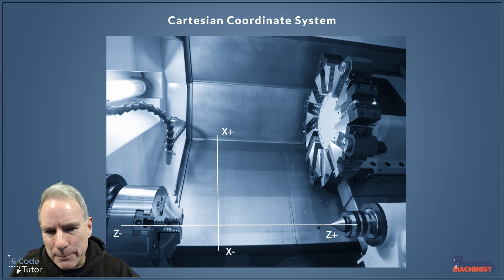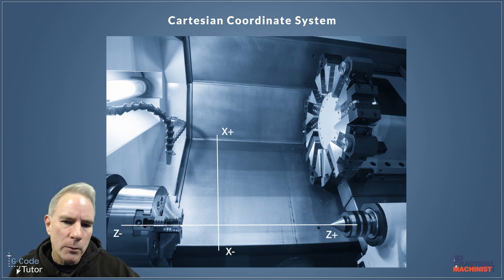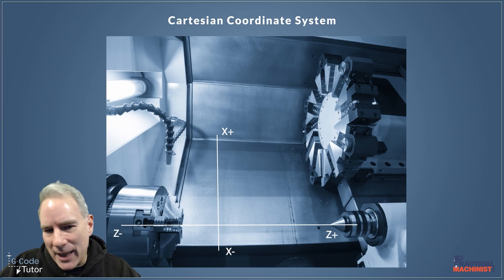And we can see here that Z minus goes into the spindle and Z plus takes our tool away from the spindle. X minus takes the cut and X plus takes our tool up out of the way of the material. So that's the basic axes on a lathe.